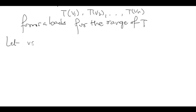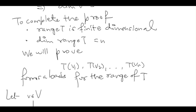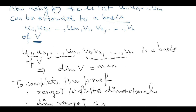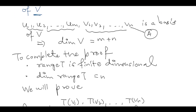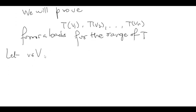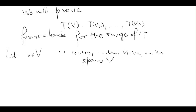Let me pick an arbitrary vector from the vector space V — let me call it capital A. The list A, which is u1, u2, ..., um, v1, v2, ..., vn, is a basis for the vector space V. So by definition it spans V. The list u1, u2, ..., um, v1, v2, ..., vn spans V. Therefore, for any vector v in V, there exist scalars α1, α2, ..., αm and β1, β2, ..., βn from the field F such that I can write v as a linear combination.